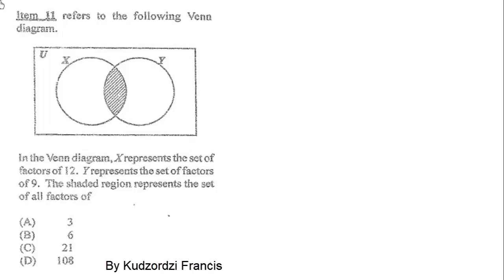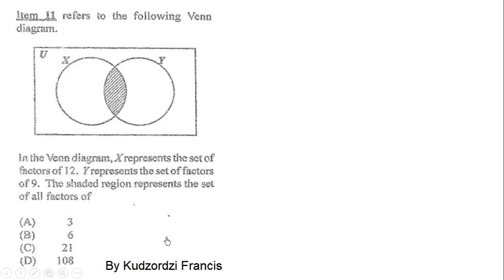We are on question 11. Item 11 refers to the following Venn diagram, so we are using this diagram to answer the question. In the Venn diagram, X represents the set of factors of 12, Y represents the set of factors of 9, and the shaded region represents the set of all factors of...